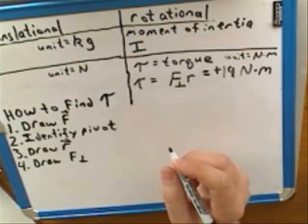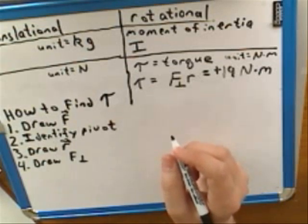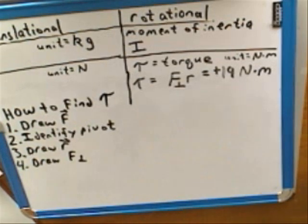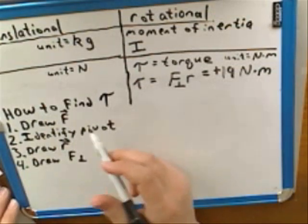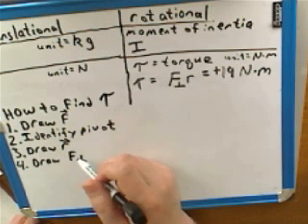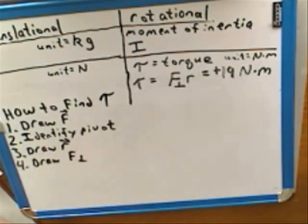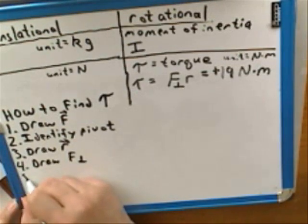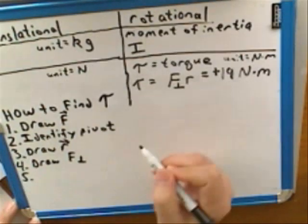Okay. Then you draw F perpendicular. What does F perpendicular stand for again? It is the component of the force that's perpendicular to the r vector. So, you can see why we had to do steps one through three, first of all. You can't figure out F perpendicular until you know where F and r are. Right. Good.